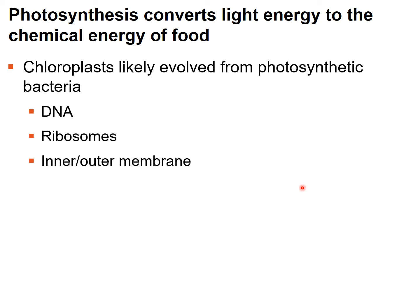Chloroplasts are thought to have evolved from a photosynthetic bacterium — specifically a cyanobacterium. Three sources of evidence support this: first, chloroplasts have their own circular DNA, very similar to prokaryotes like bacteria; second, they have their own ribosomes that synthesize proteins used in photosynthesis; and third, they have an inner and outer membrane, similar to some bacteria. These three pieces of evidence suggest chloroplasts originated from a cyanobacterium.